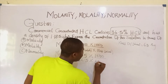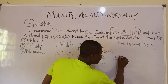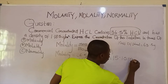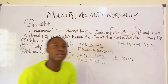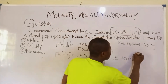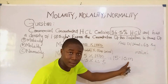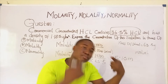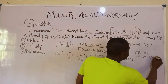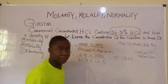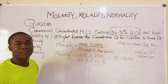Molality = (36.5 × 1000) / (36.5 × 63.5) = 15.75 moles per kg (15.75 m). Note that molality uses a lowercase 'm', while molarity uses uppercase 'M'. Determining molality is straightforward once you have the solute and solvent masses.